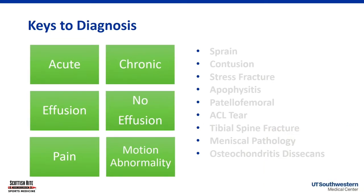What I'd like you to think about is breaking it down into some history and physical findings that can really help you narrow down this list. Your history often will get you pretty far, as in most things, to the diagnosis. So: acute versus chronic presentation, effusion versus no effusion, and is it primarily a pain problem or primarily a motion abnormality? That's the system we're going to use.